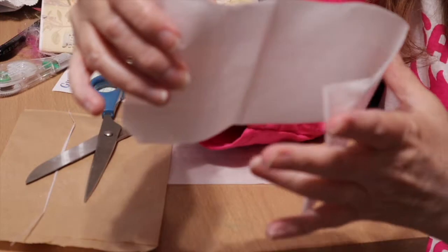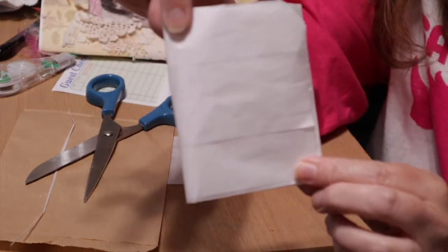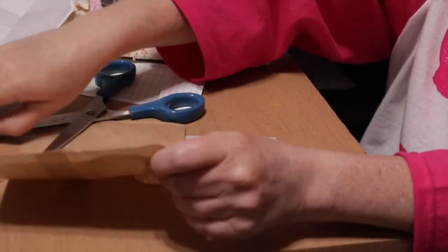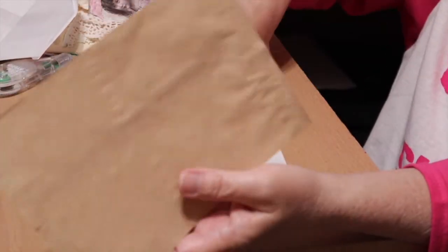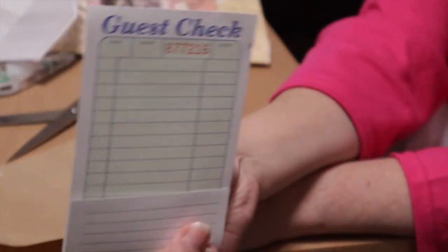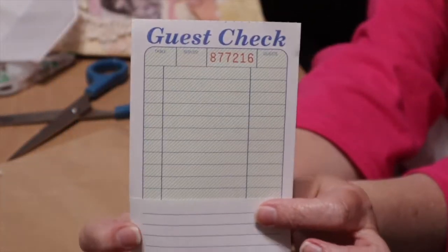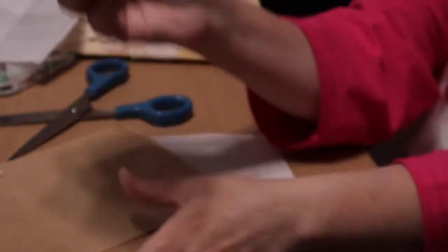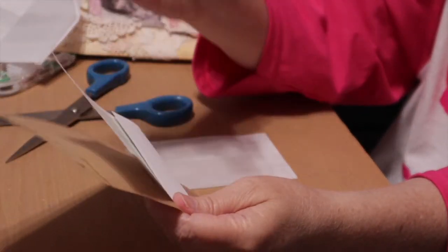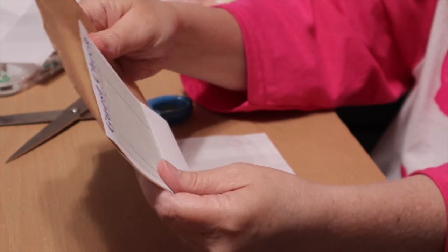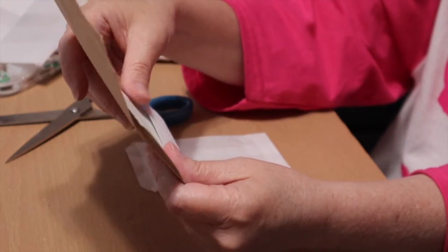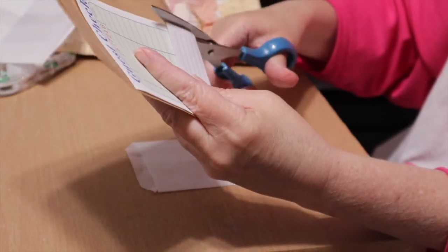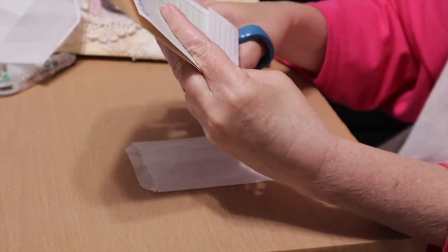Another thing you can do is make a fancy journaling card. You can take a guest check, fold it so you have a little pocket in the front, and you'll either glue or tape the edges. Then you get a bag, whether you have one to fit or not—whatever you have in your stash. Then I'm going to cut my bag and I'll seal the one side.